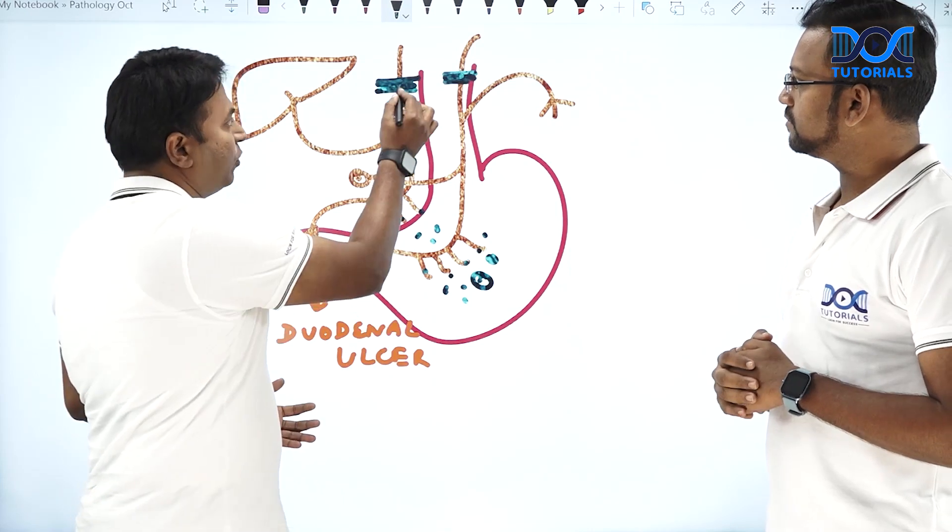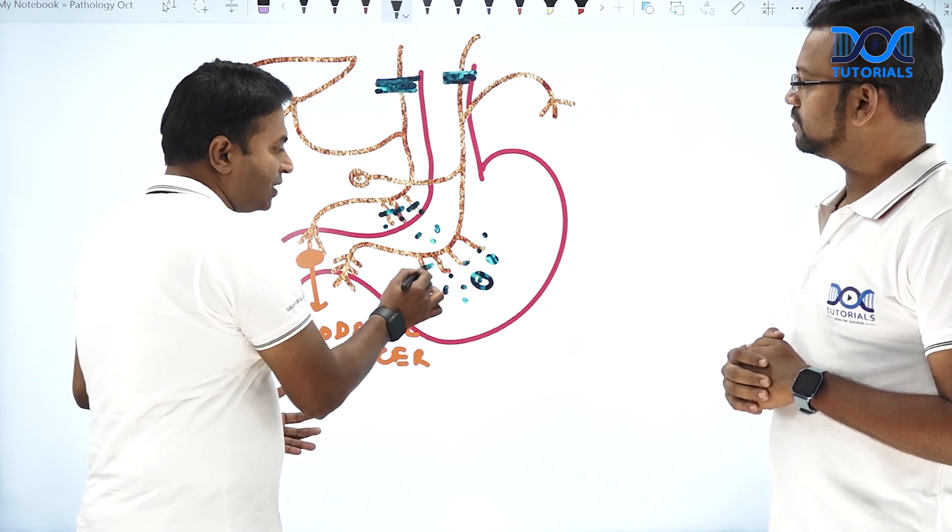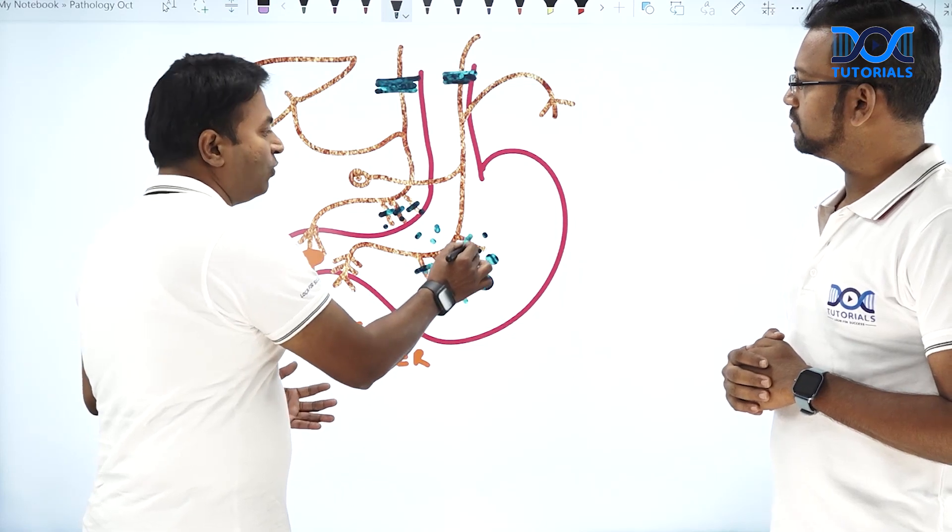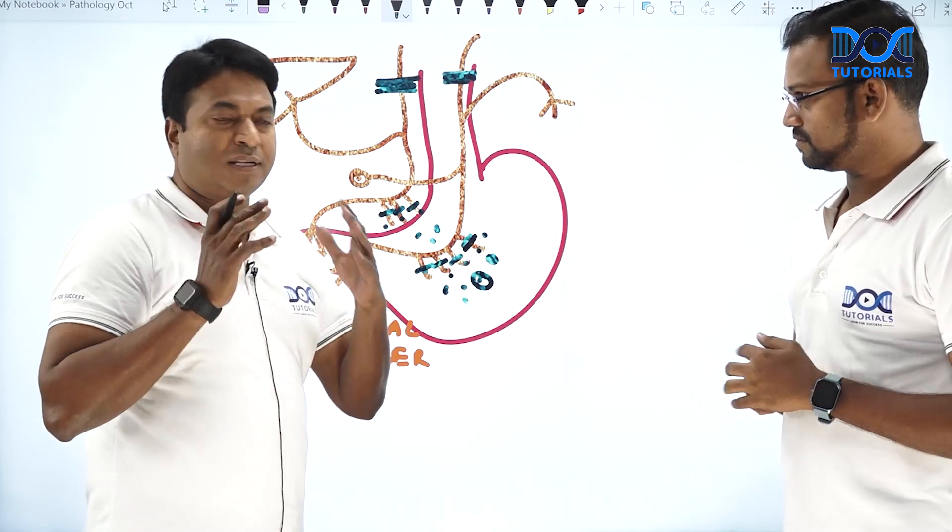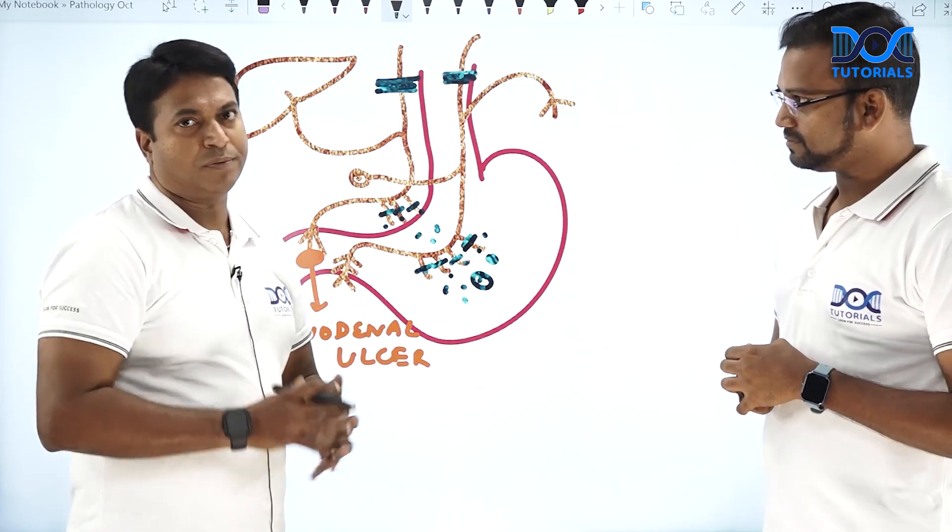Another treatment is instead of doing a truncal vagotomy, we can cut only these small branches. This surgery is known as high selective vagotomy. We are going to discuss the surgical points related to the complications in the upcoming session. Thank you.